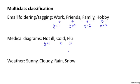And the third and final example: if you are using machine learning to classify the weather, maybe you want to decide that the weather is sunny, cloudy, rainy, or snow.